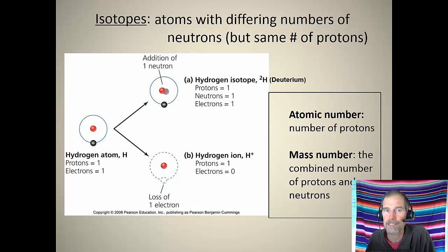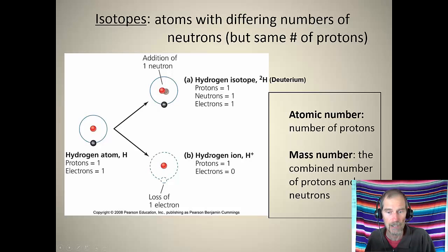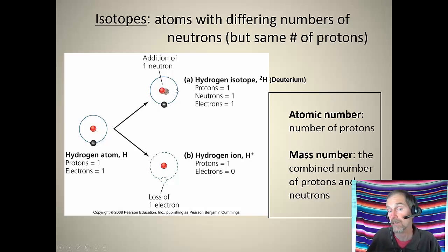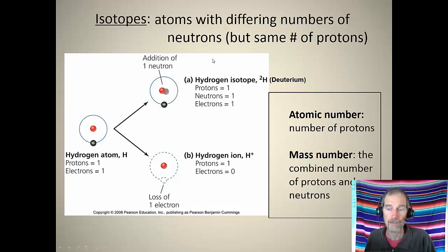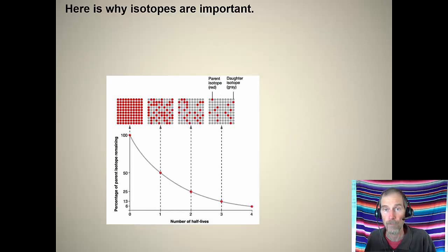There's something interesting about elements: every single element may have different isotopes. An isotope is an atom of a particular element with a differing number of neutrons. Here we have two hydrogen atoms — both have one proton, but one has zero neutrons and the other has one. Adding a neutron doesn't change its chemical properties since it doesn't change the charge, but it changes the mass slightly. This second one is known as deuterium, and there's also tritium. These are called isotopes.